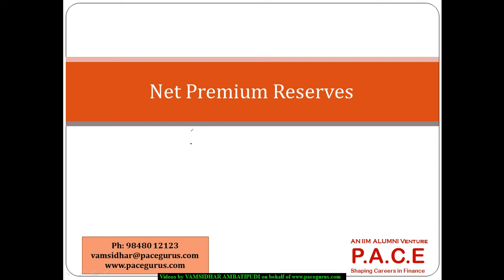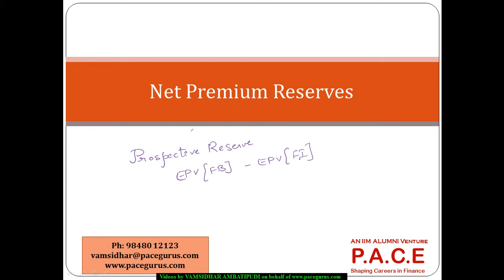Let's look at the computation of the net premium reserves for different kinds of policies. The net premium reserve is a prospective reserve, which means the expected present value of the future benefit minus the expected present value of the future incomes, which is the premiums. Because we are using the word net premium, there is no allocation for expenses in the reserve computation — only the premium and the death benefit and the expected cost of the claims.